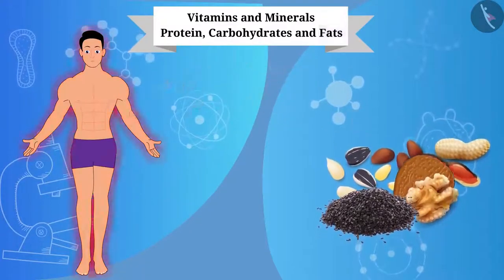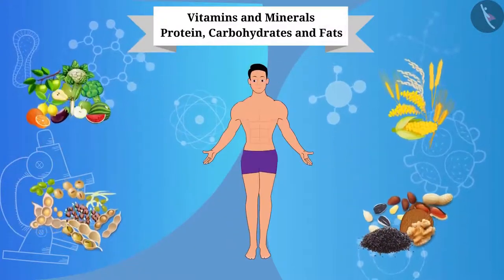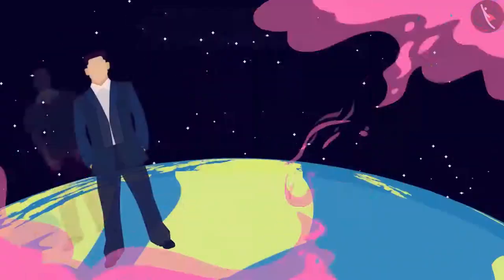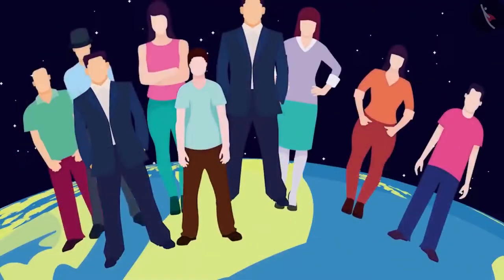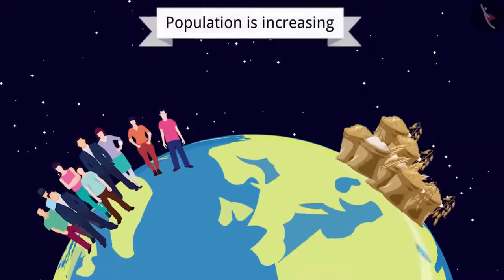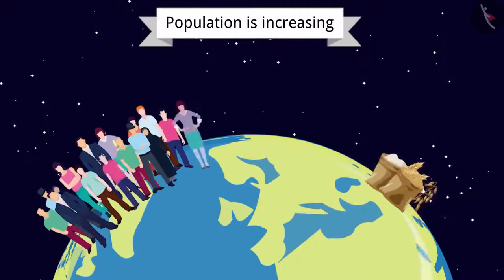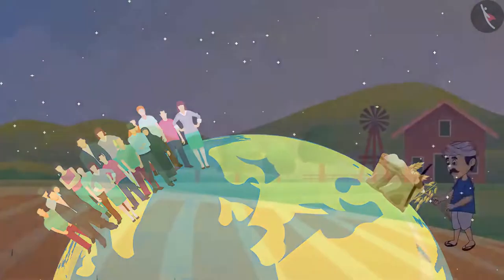Well, we got to know how important fruits and vegetables are for the human body. Friends, but the population is increasing day by day. And with the increase in population, the demand for food is also increasing. In order to meet this, the quality and production of the crop should be increased. But have you ever thought how it can be possible? Let's know how.